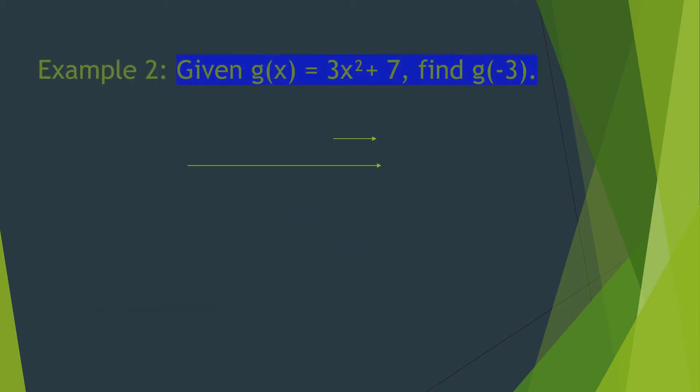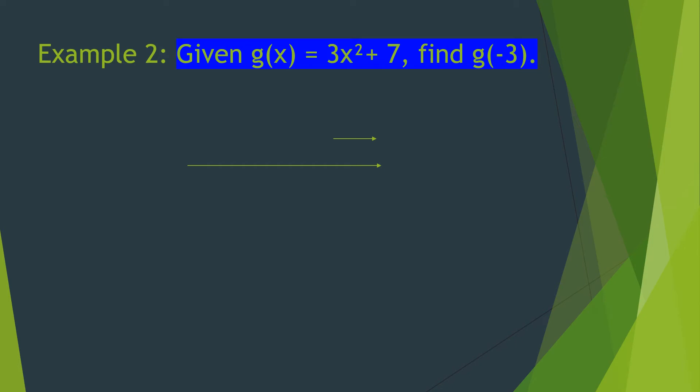We go to the next. We have another function: g of x is equal to 3x squared plus 7. We are going to find the value of the function when x is equal to negative 3. This time, we are going to replace the value of x with negative 3.